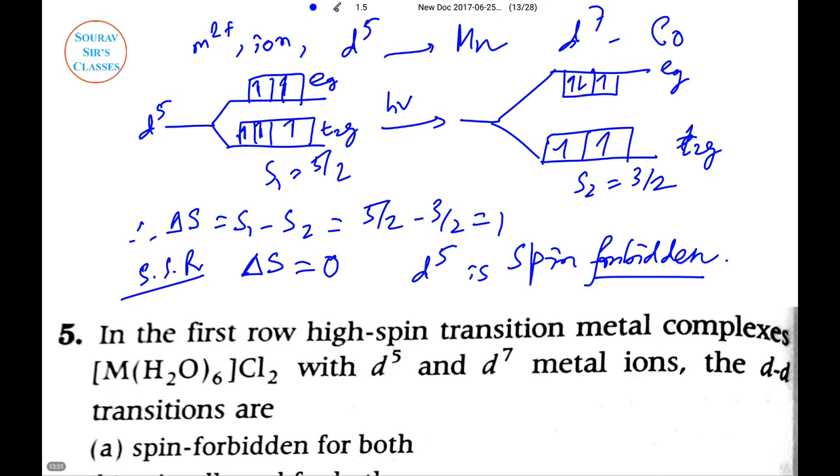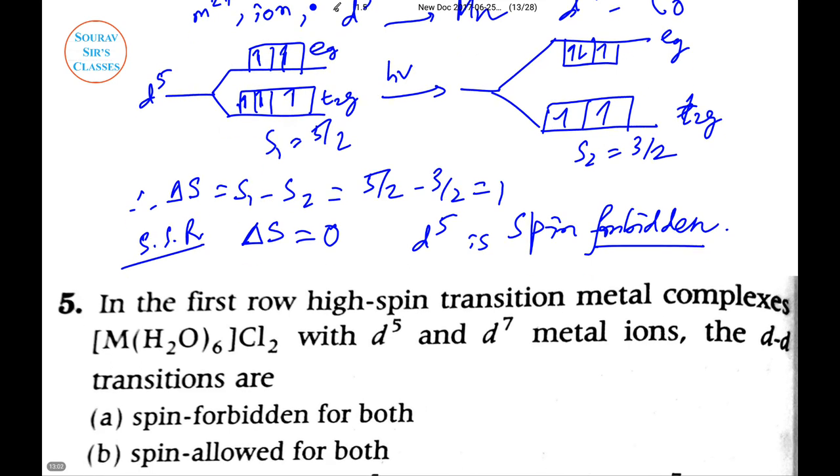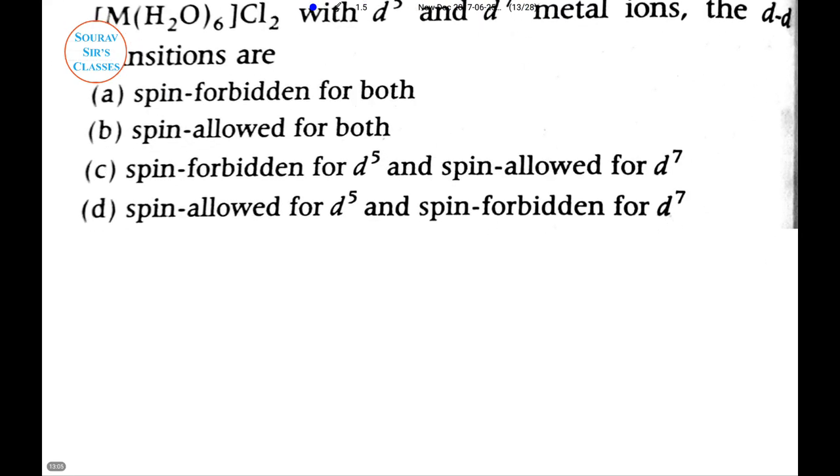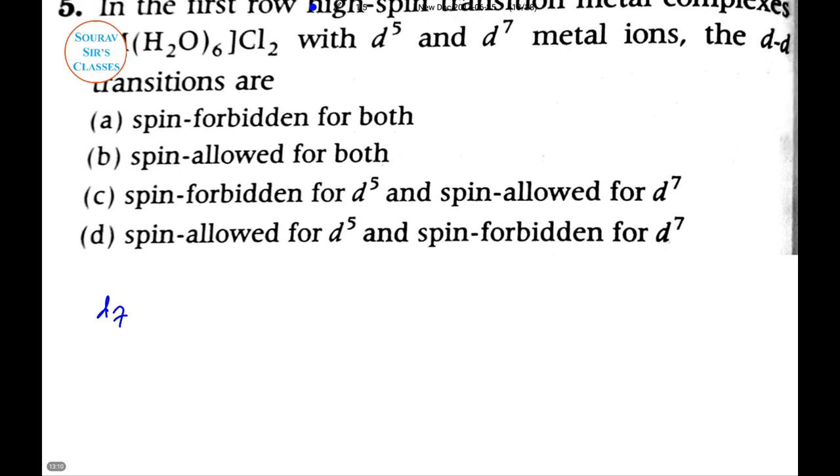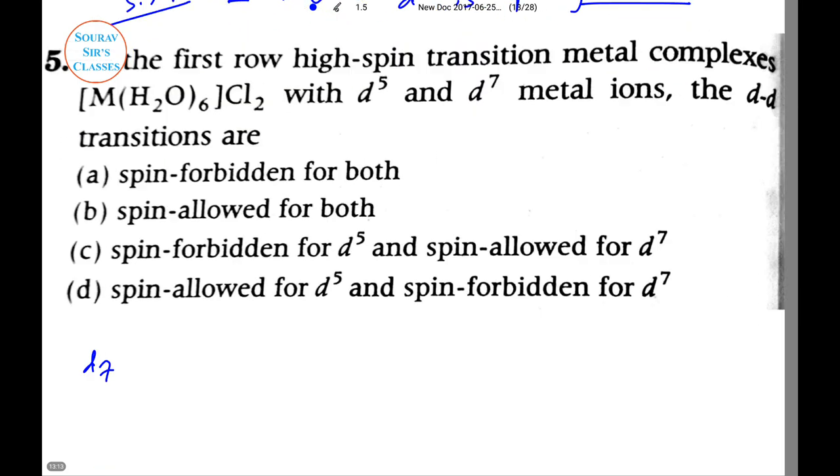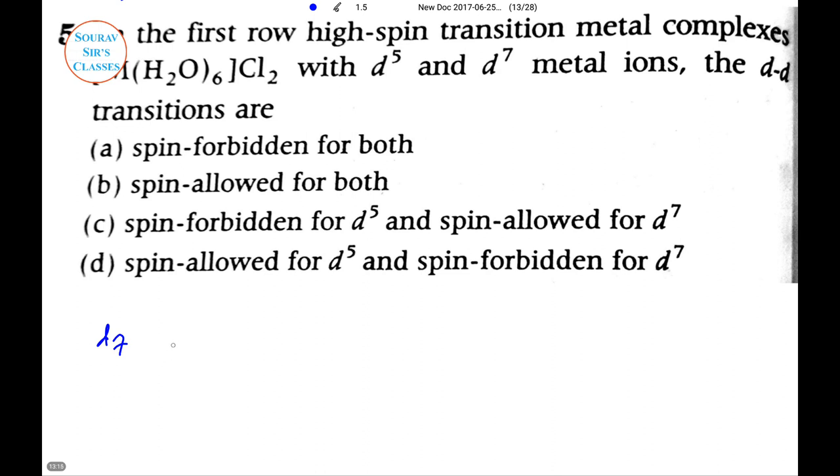Now I'm going to check for the next one. For d7, the diagrams are almost the same, only there will be a little bit of changes. Here in case of d7 it will be like something like this - one paired electron in t2g, the other positions single. So this is one way in eg and two ways in t2g. So S1 equals 3/2.